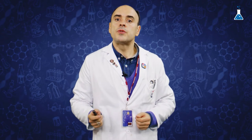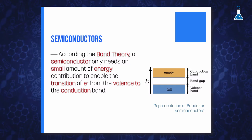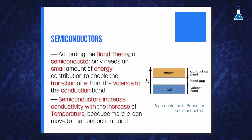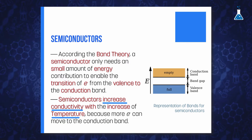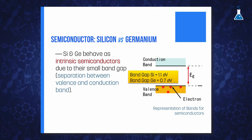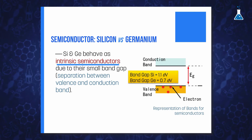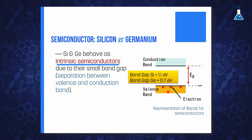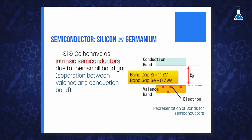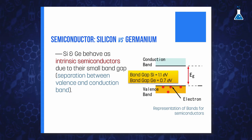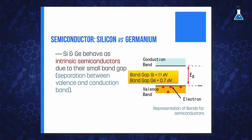The increase of thermal energy makes more electrons move to the conduction band, and that is the reason why conductivity increases with temperature for semiconductors. Unlike carbon, which has a band gap of 5.5 electron volts and behaves as an insulator, silicon and germanium behave as intrinsic semiconductors due to their small band gaps of 1.1 and 0.7 eV respectively.